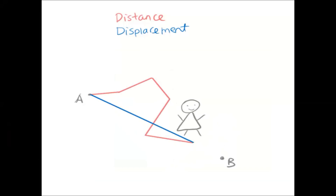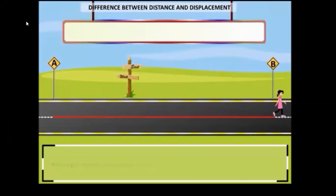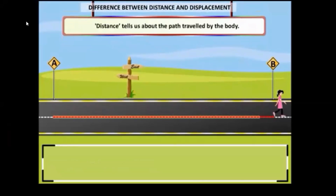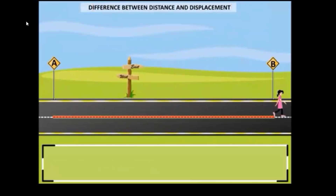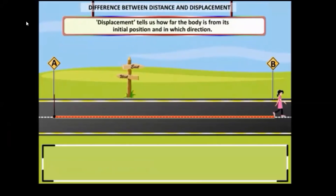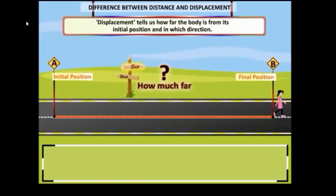Let us understand distance and displacement in detail from the given example. Here we can see a girl is moving from position A to position B. The distance covered by the girl is 15 meters. For calculating displacement, we look for the shortest straight line distance between starting and ending point — here displacement is also 15 meters and the direction is east.